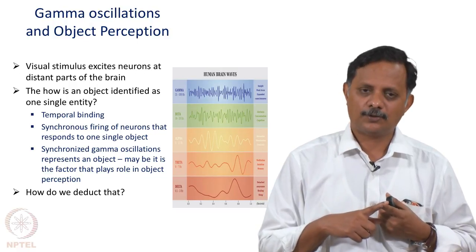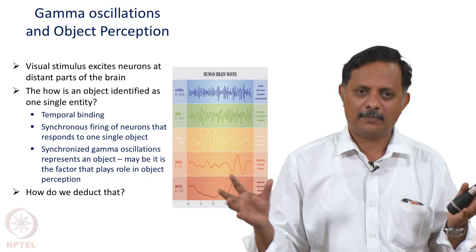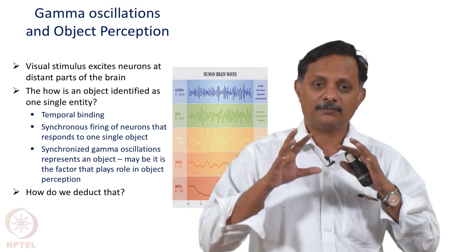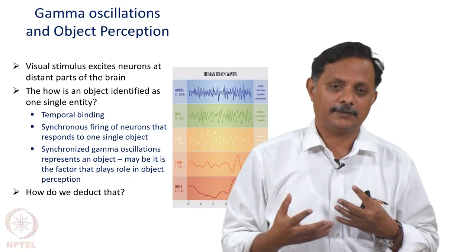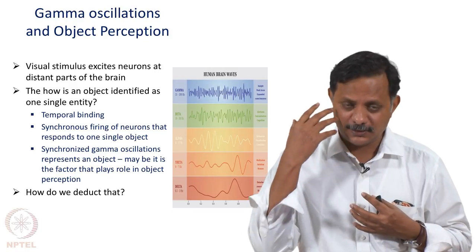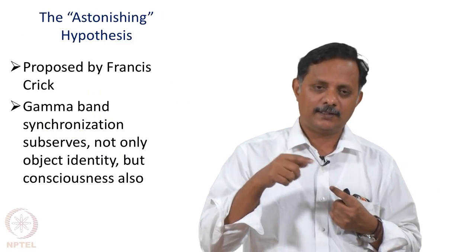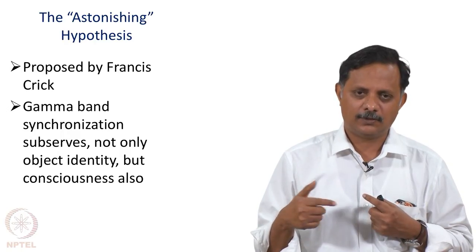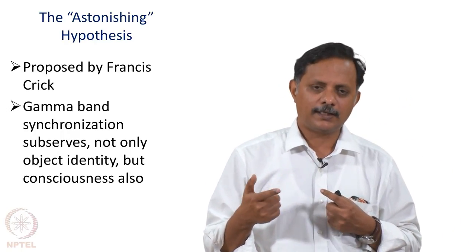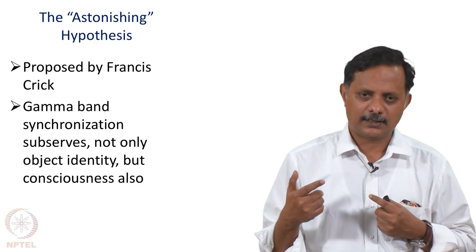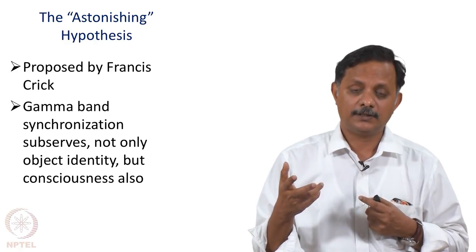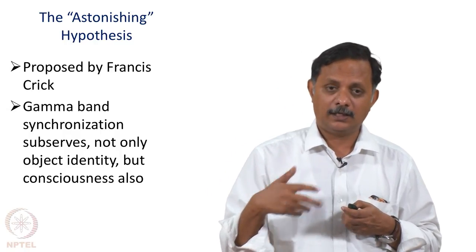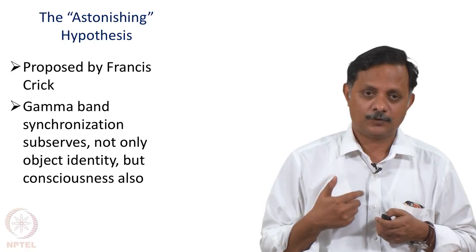However, this only talks about object identity — how the brain combines an object's various properties and encodes object integrity. It does not say anything about how you actually experience or perceive the object. Here Francis Crick made a theoretical leap in what is called the 'astonishing hypothesis': gamma band synchronization subserves not only object identity but also consciousness itself. That means unless activity becomes synchronized in the gamma band, it does not enter consciousness.